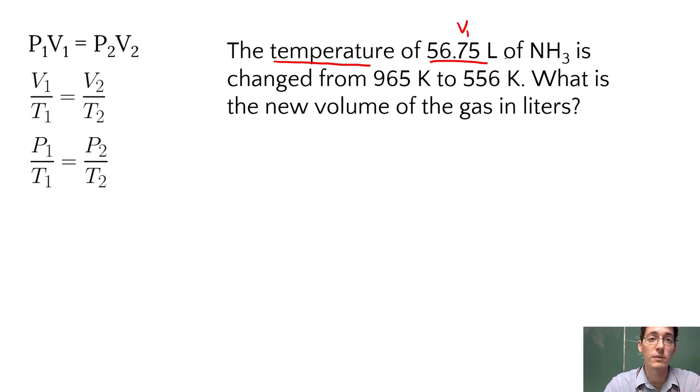I'm going to call this V1. That's my starting volume of ammonia is changed from 965K, so this is my initial temperature T1, to 556K. This is the change. This is going to be T2. What is the new volume? So V2 is our question mark.